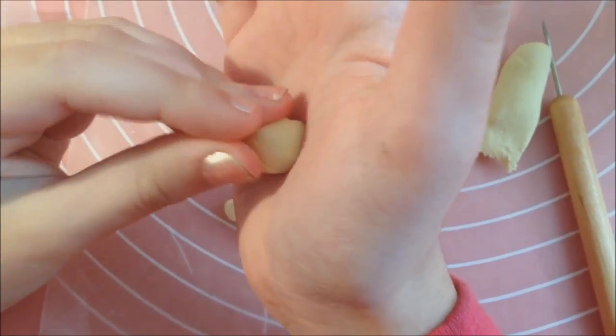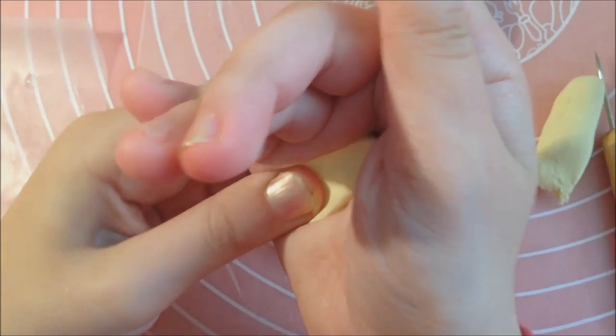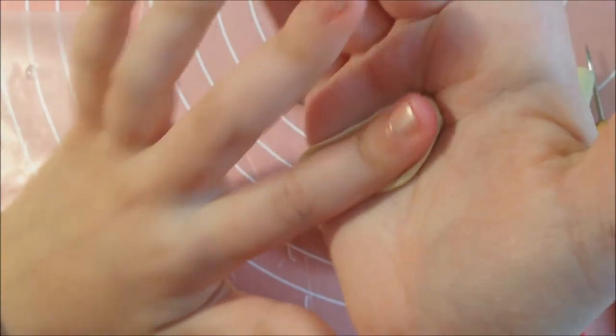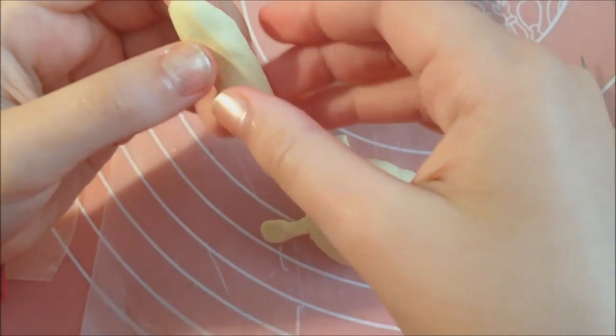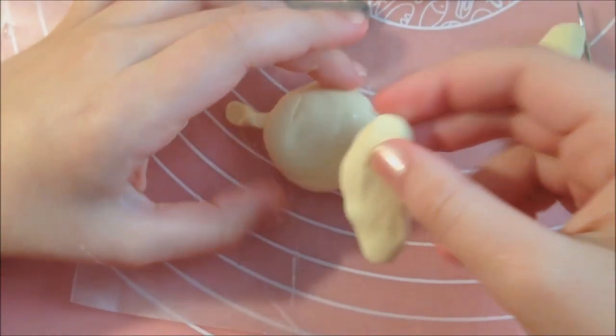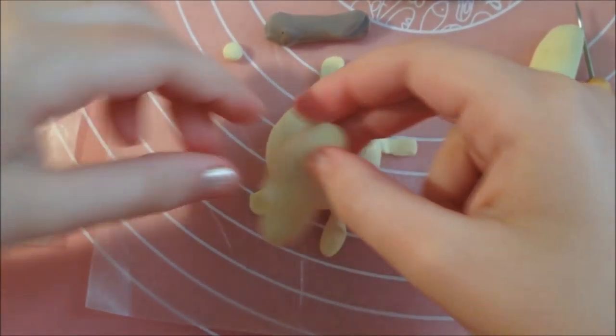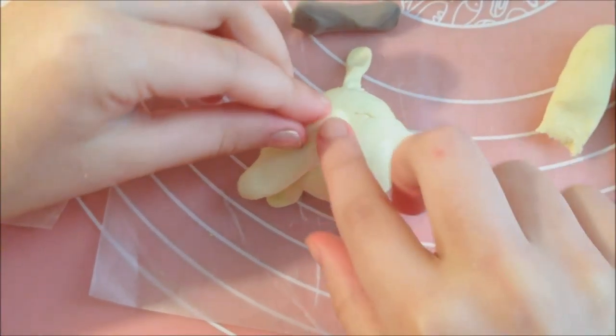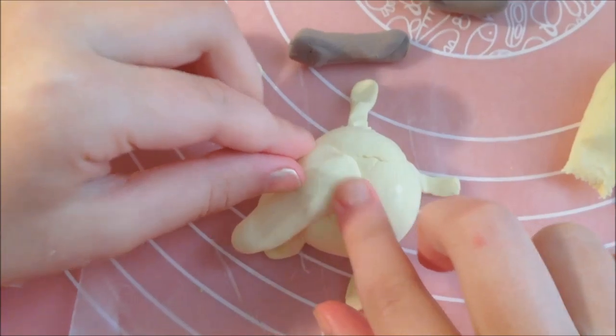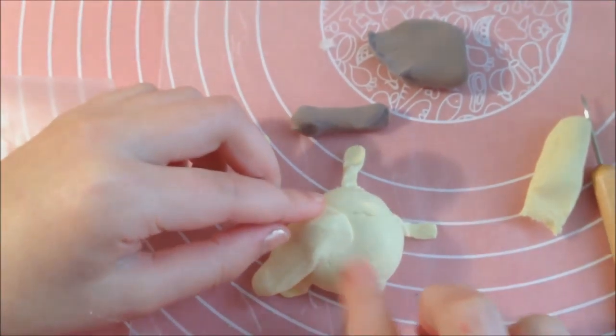And so now what you want to do is you want to take a ball of clay and use your fingers to flatten it out into the wings. So now you want to take this and decide which part you want to be the front, and just that part, and attach the wings on. If you're having trouble with this part, use some water to help you out.